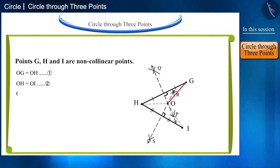Therefore, we can say that OG is equal to OH is equal to OI, which means that points G, H, and I are at the same distance from the point O.